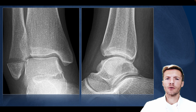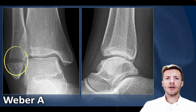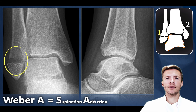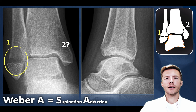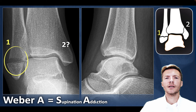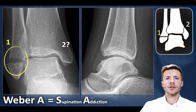In this first case we already identified a Weber A fracture, which corresponds to a supination adduction injury. We check for grade 2, which would be an oblique fracture of the medial malleolus — that is not the case here. So this is a supination adduction type 1 fracture.